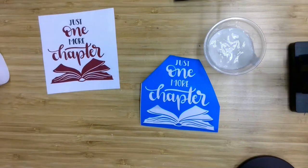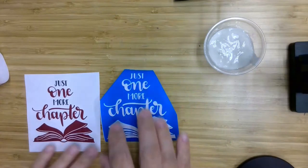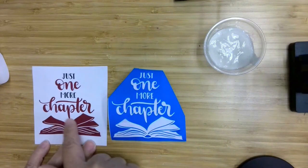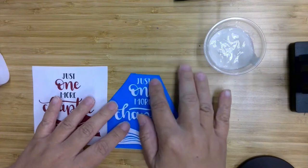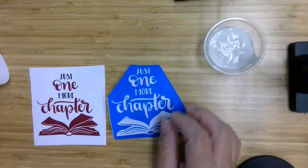So the etching cream is going to show up on the glass everywhere that you see either this berry color or this gray color. So what we want to do is transfer this to the glass, and for that you need your contact paper.